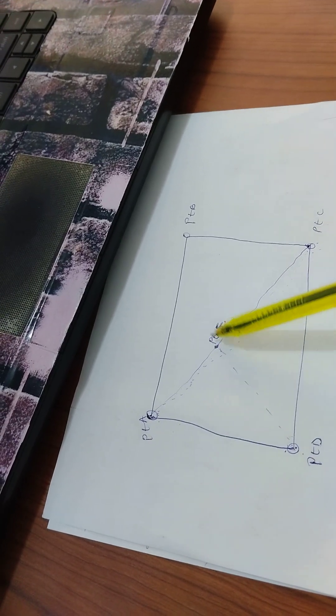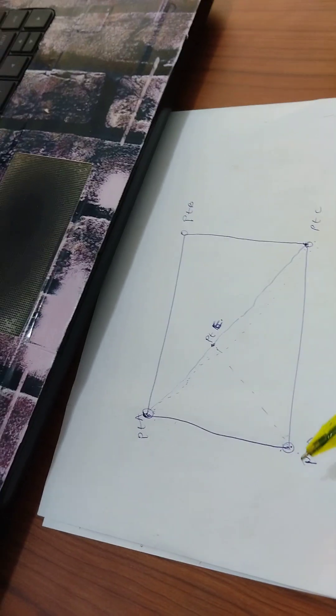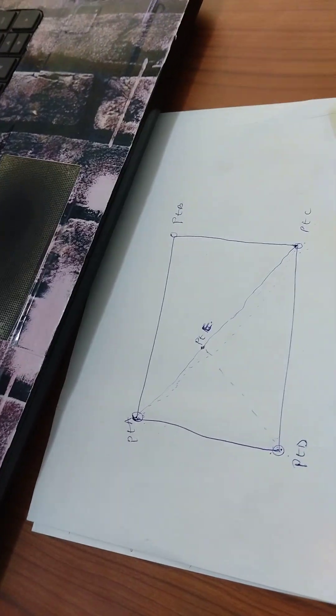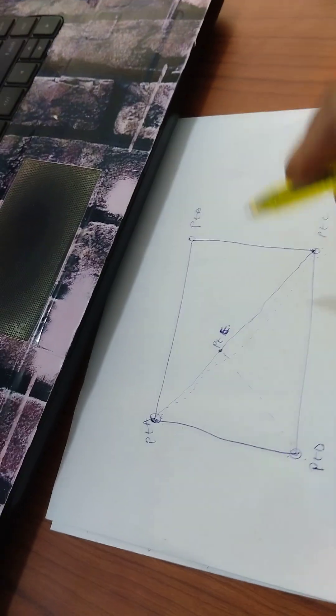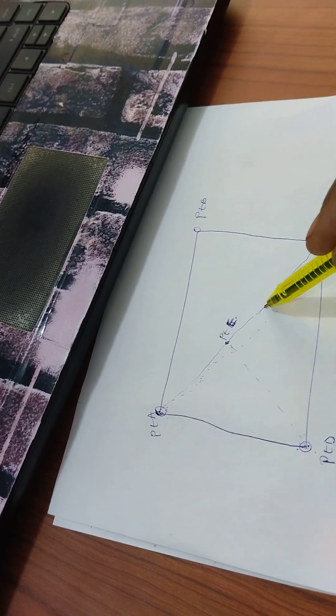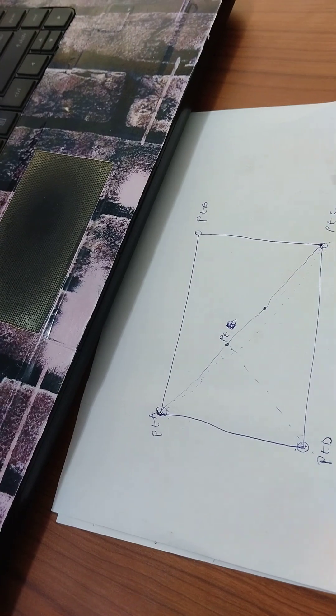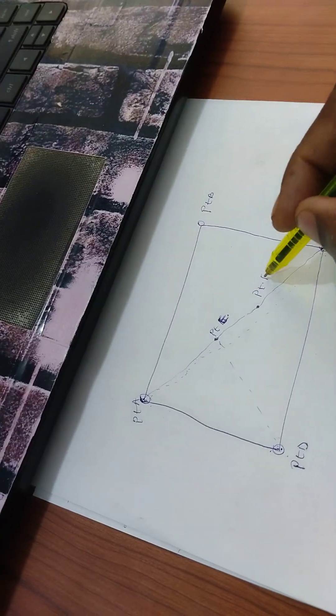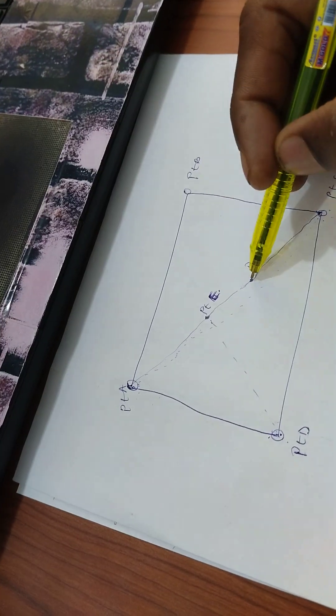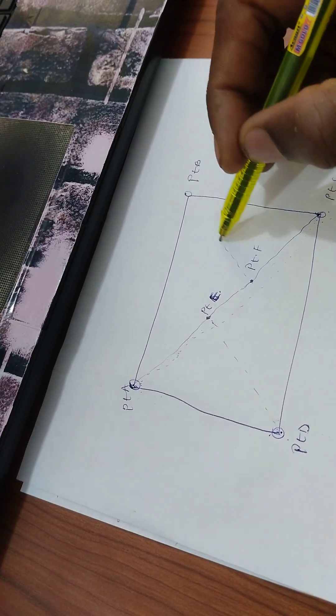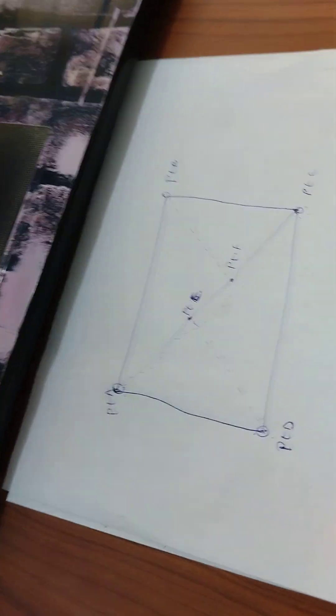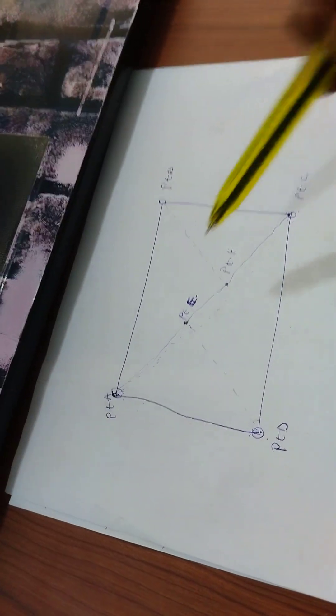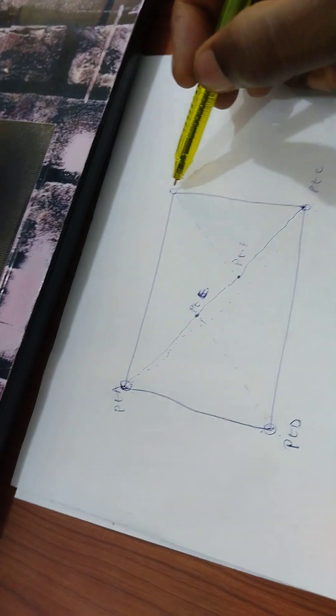You have A, E, D. That is another triangle. And you have D, E, C. That is another triangle. And also, along the line, you mark point F, where you join, where you can easily join it to point B. So that you take measurement from point F to point B.